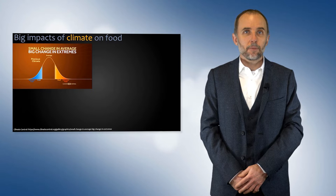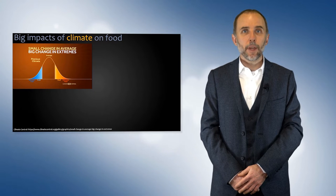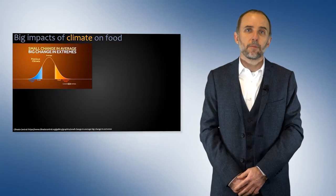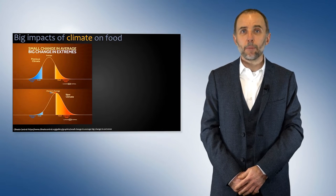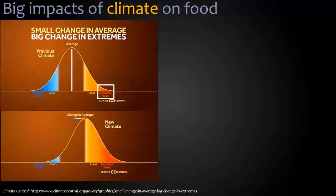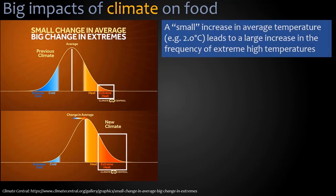Our food systems have big impacts from climate. We know that our future climate is going to be warmer. These two graphs show how extreme weather events, which are currently a very small part of the distribution of weather events, are going to become much more frequent. A small increase in average temperature of one or two degrees will lead to large increases in the frequency of these extremes.